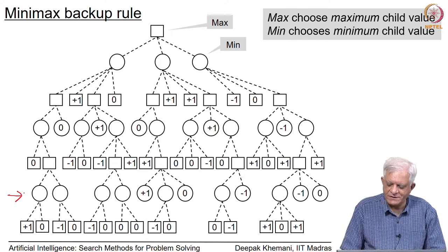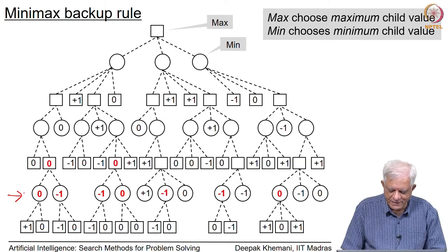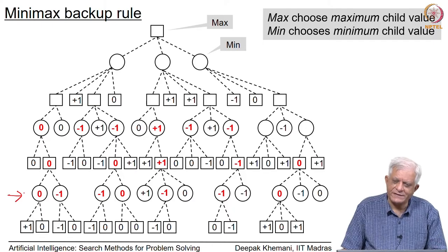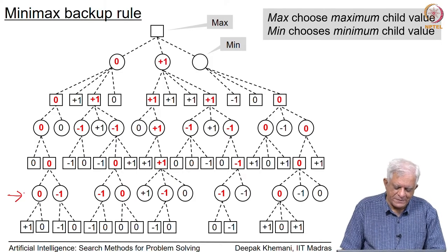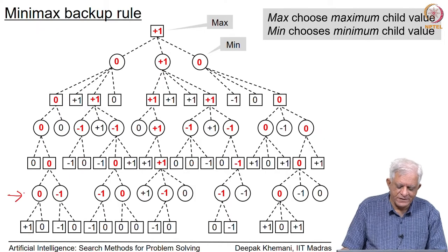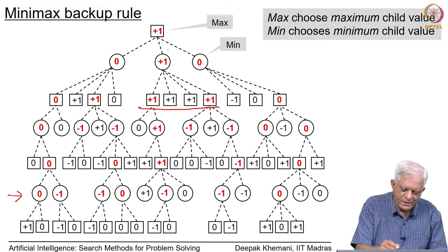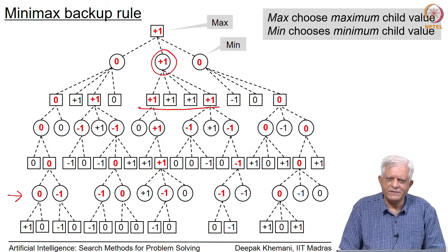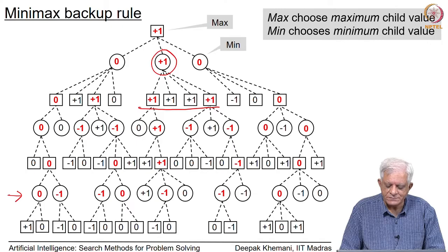At each stage Min is choosing the minimum of all possible values and Max is choosing the maximum of all possible values. Sometimes Min is forced to choose +1, which is a win for Max — this happens when all the children of a Min node are labeled +1, leaving it no choice but to back up +1. This small game tree is such that if both players play perfectly, Max will win the game.